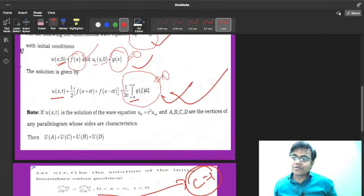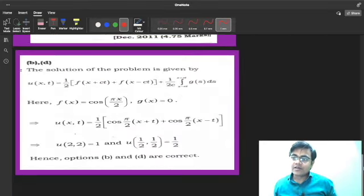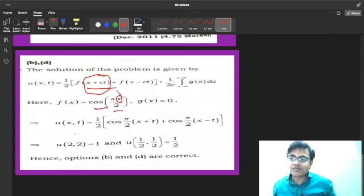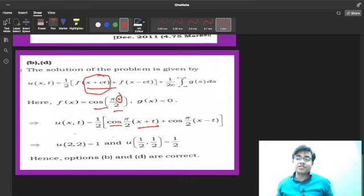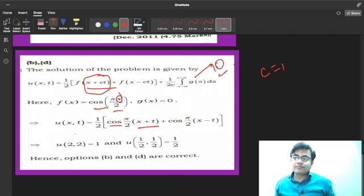Let's come to the solution. Your solution will be given by this according to the theory. f(x+ct): f(x) is cos(πx/2), so in place of x we will write x+ct, so it will become cos[π/2(x+t)] because your c is 1. g was 0 in this question so all these terms are going to become 0. And f(x-ct), so c is 1, so it will become cos[π/2(x-t)].